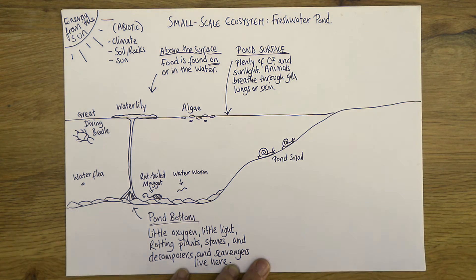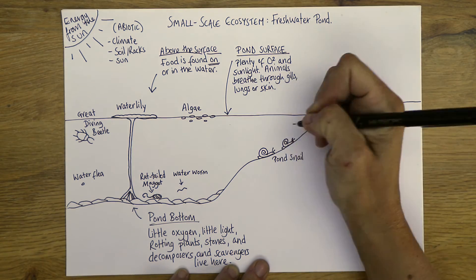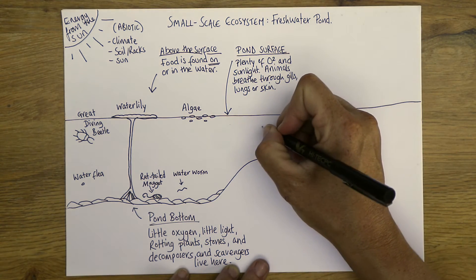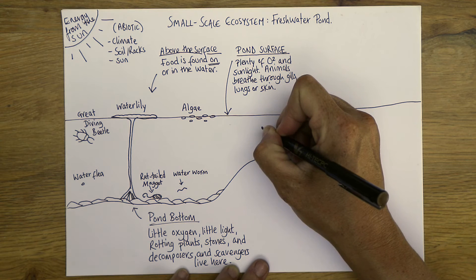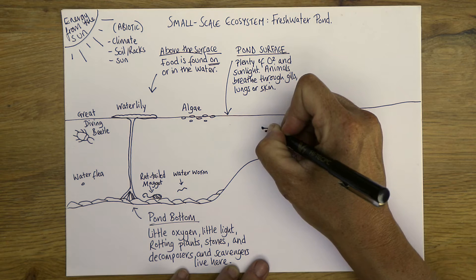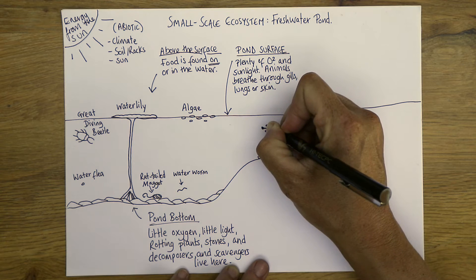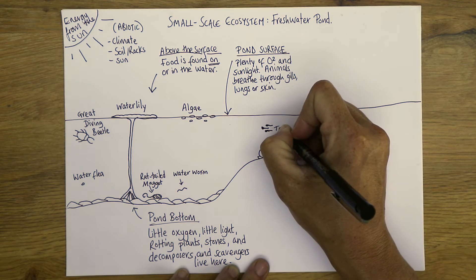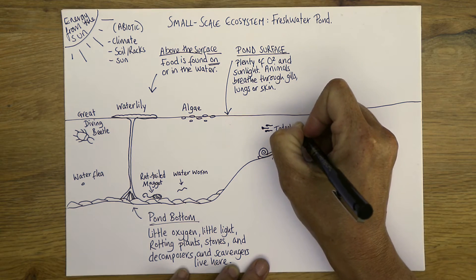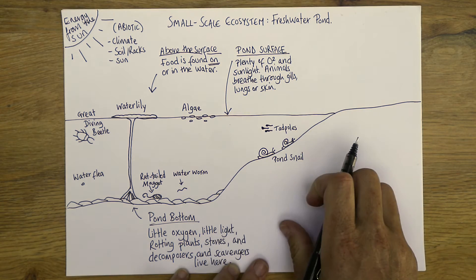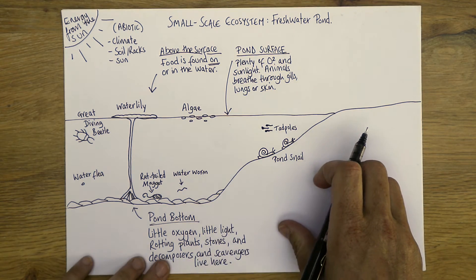I'm not going to draw a frog, but frogs are very synonymous with ponds. I'll put a couple of little tadpoles in — maybe three. Baby frogs live in the shallows of the pond and are part of that ecosystem.